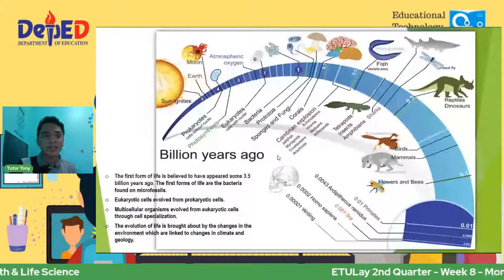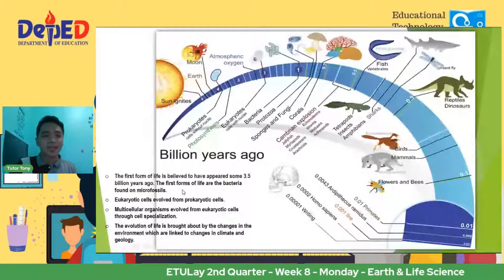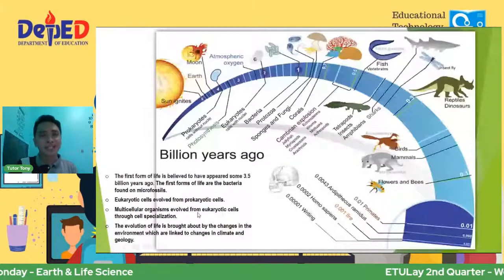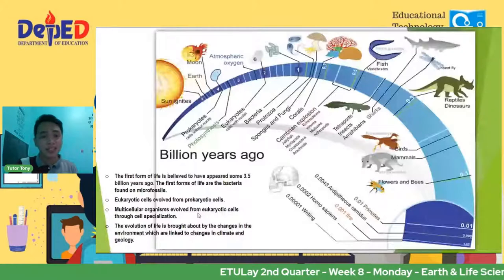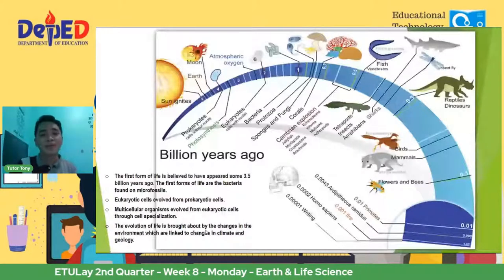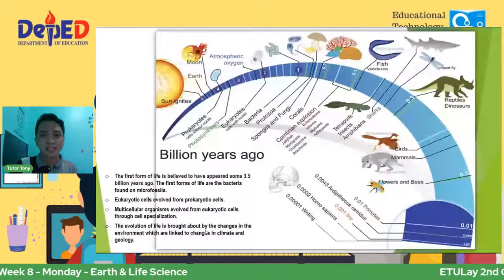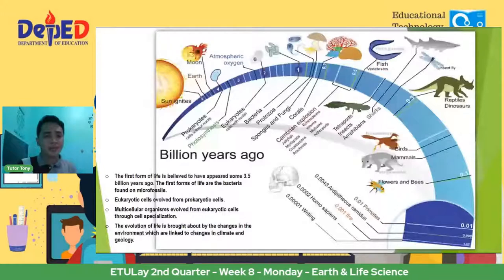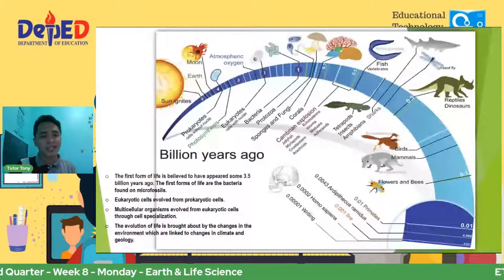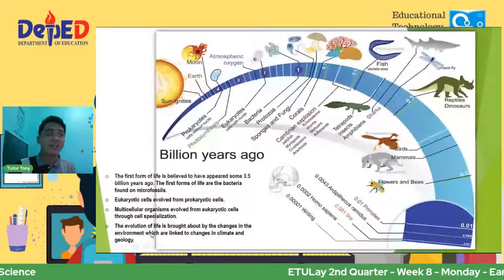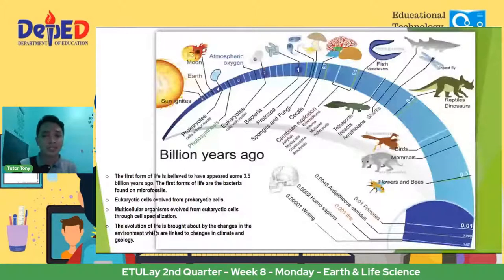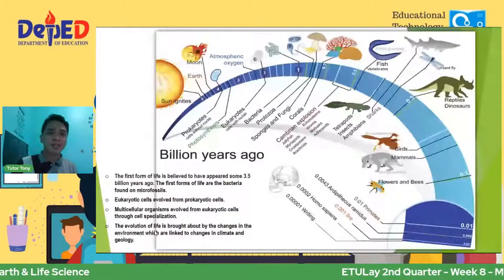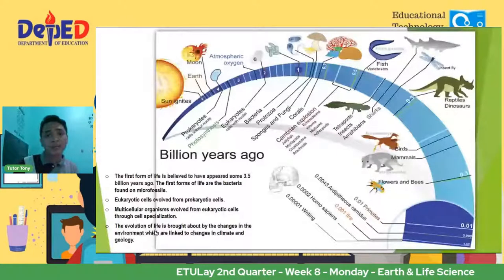We also have this concept of multicellular organisms just like us — mga animals, mga plants — we are all multicellular organisms made up of millions or billions of cells. We evolved from eukaryotic cells that underwent the process called cell specialization. Speaking of the factors, the evolution of life is brought about by the changes in the environment — that's the number one factor kung bakit nag-evolve yung mga organisms. In order for us to survive, kailangan natin mag-adapt sa environment. Pwede magbago ang physical characteristics natin, yung morphology, behavior, and combination of those changes.